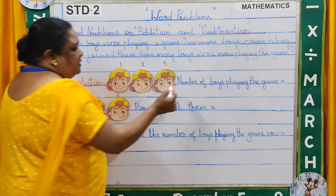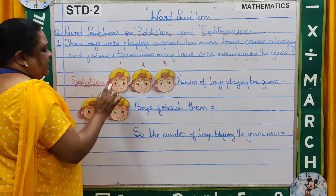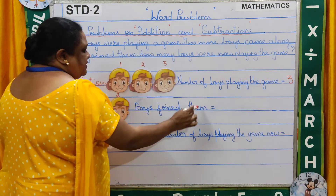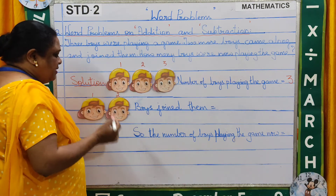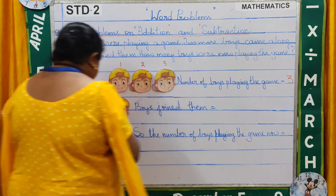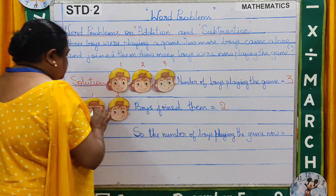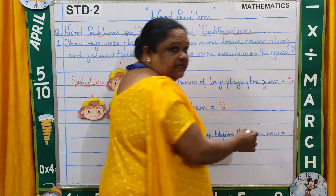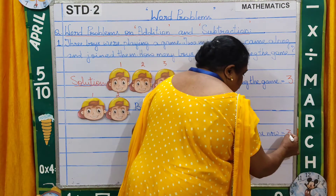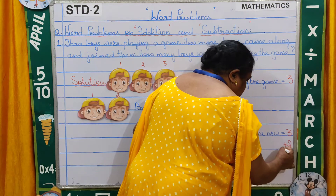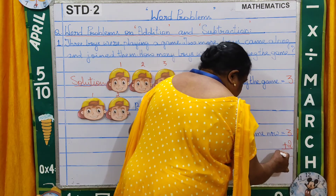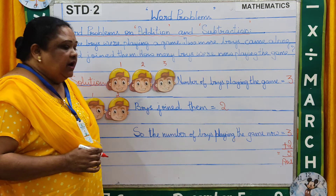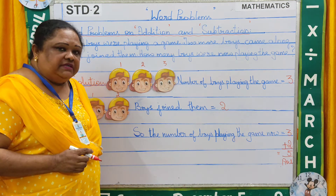Now the first statement: number of boys playing the game — there were 3 boys playing the game. Boys who joined the game: two boys joined the game. So the total number of boys playing the game now: 3 plus 2 is equal to 5. There were 5 boys playing the game.